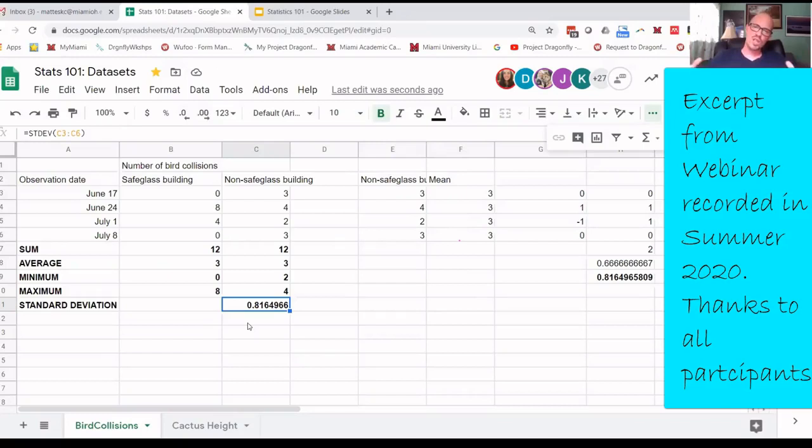But I wanted to show you guys the formula because I think it gets you understanding, hopefully, how this formula came to be, why it exists, and it will tie into the normal distribution. So we drag this over and we see that the standard deviation of the safe glass building is 3.83. And so now we've got another measure of variation for those two buildings.